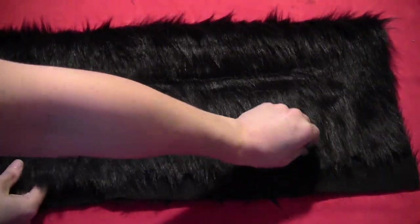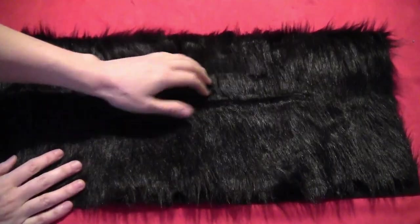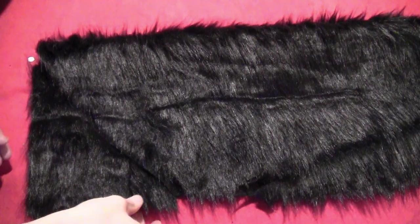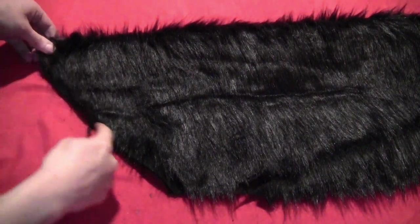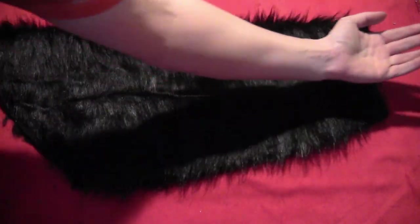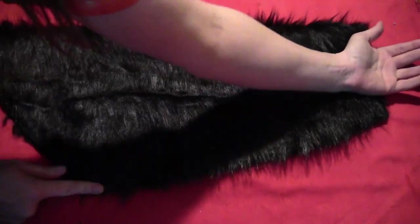Take some fake fur and fold it in half into a rectangle as long as your arm. Cut the end off at an angle, then cut the side at an angle so it tapers down to your wrist.